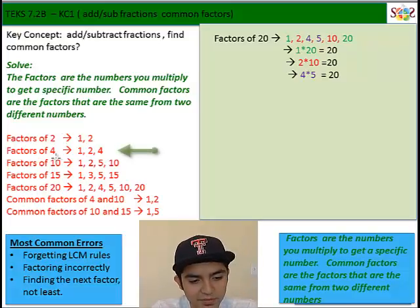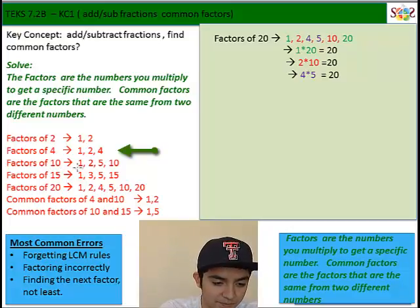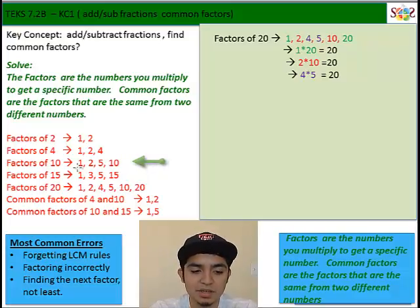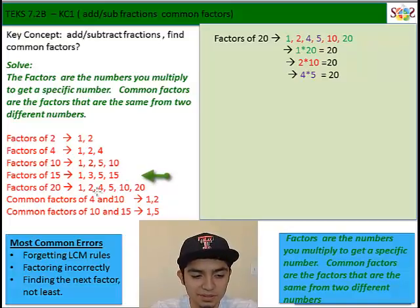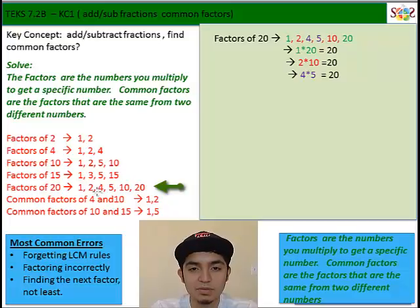So then we have factors of 4 which are 1, 2, and 4. Then we have factors of 10 which is 1, 2, 5, and 10. Then we have 15 which are 1, 3, 5, and 15. Then we have 20 which is 1, 2, 4, 5, 10, and 20.